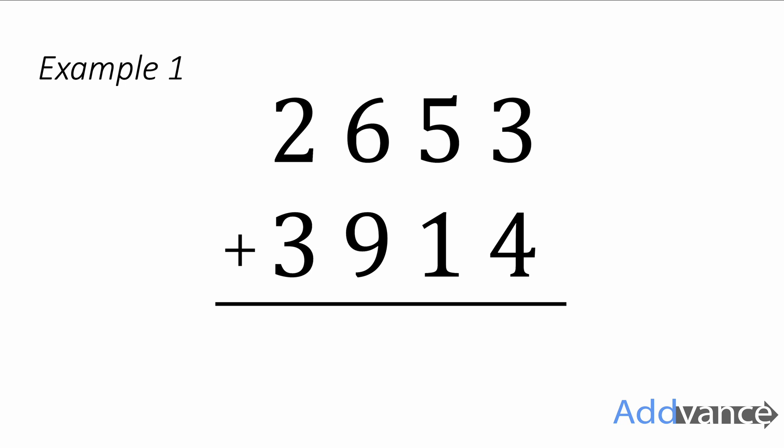The units column is on top of each other, the tens column is lined up and the hundreds column is lined up and of course the thousands column are lined up on top of each other. Now I'm going to start adding these together step by step starting on the right side.